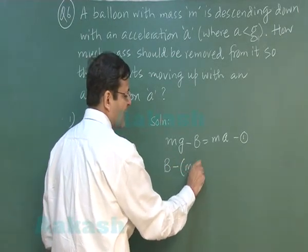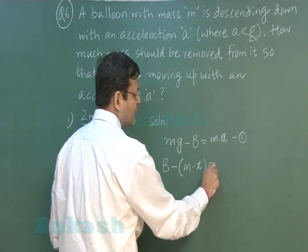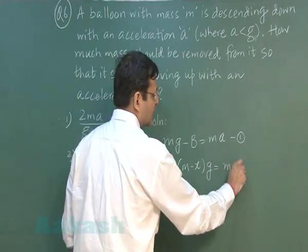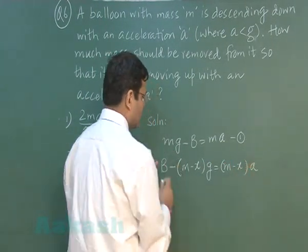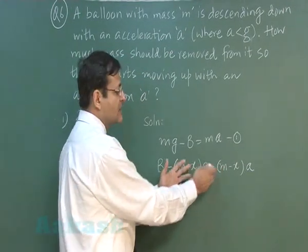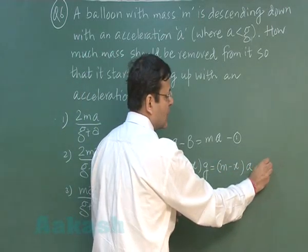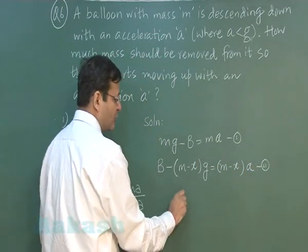Let us suppose the mass x has been removed. The new equation formed will be: force of buoyancy minus the lesser weight now, which is (m-x)g, equals mass (m-x) times acceleration a upwards, and you have to solve this for x.